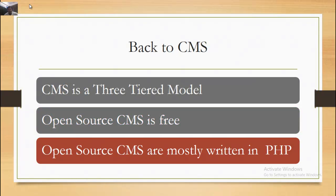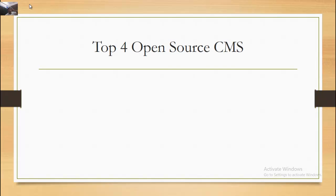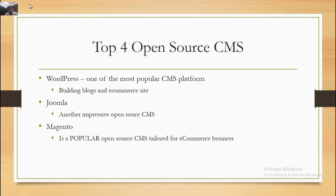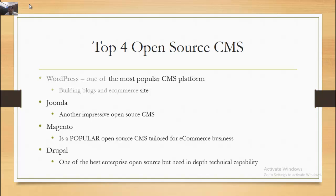Back to CMS — CMS is a three-tiered model, and open source CMS are mostly written in PHP. The top 4 open source CMS platforms are: WordPress, one of the most popular CMS platforms for blogs and e-commerce sites; Joomla, another impressive open source CMS; Magento, a popular open source CMS tailored for e-commerce businesses; and Drupal, one of the best enterprise open source CMS requiring medium-depth technical capability.